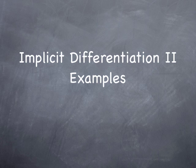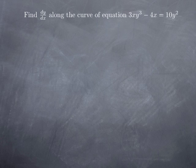Now we're going to go over a few more examples where we use implicit differentiation. Let's say we want to find dy over dx — the rate of change of y with respect to x — when we move along the curve of equation 3xy cubed minus 4x equals 10y squared.